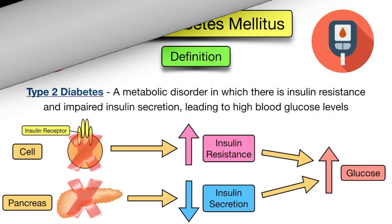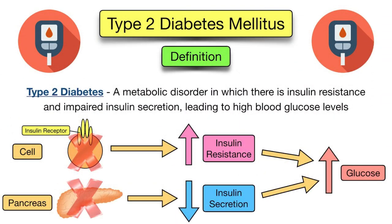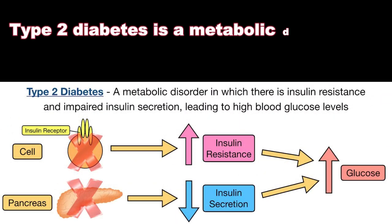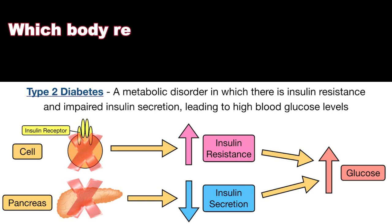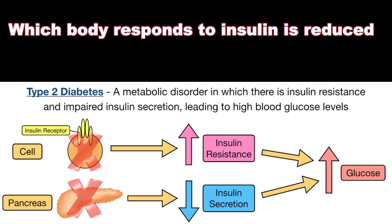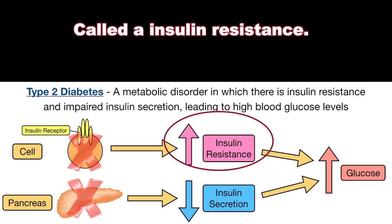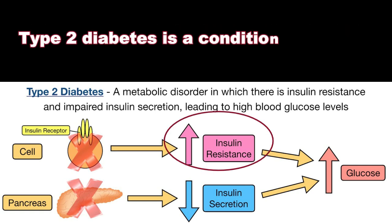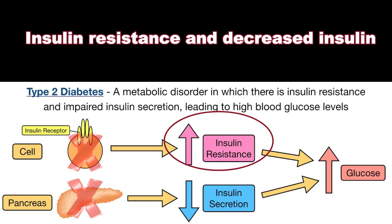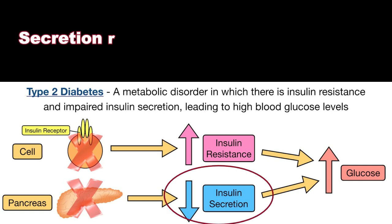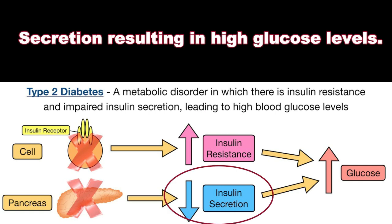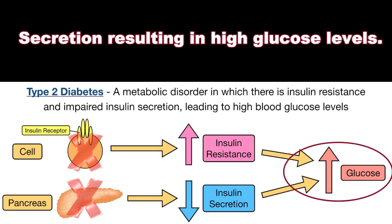Welcome to the second part of tutorials about diabetes. Type 2 diabetes is a metabolic disorder in which the body's response to insulin is reduced, called insulin resistance. Type 2 diabetes is a condition caused by insulin resistance and decreased insulin secretion, resulting in high glucose levels.